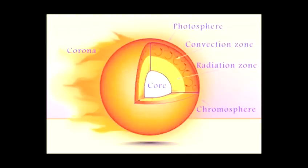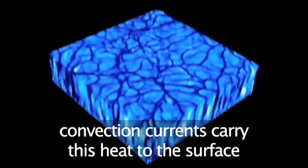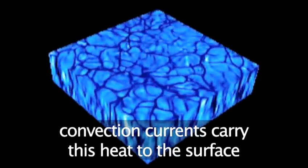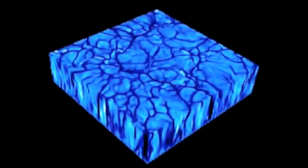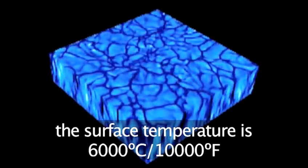The central core is where the reaction of hydrogen into helium takes place. The temperature here is 15 million degrees centigrade. This heat and reaction takes a long time to make its way to the surface, by which time it has cooled to a mere 10,000 degrees Fahrenheit or 6,000 degrees centigrade.